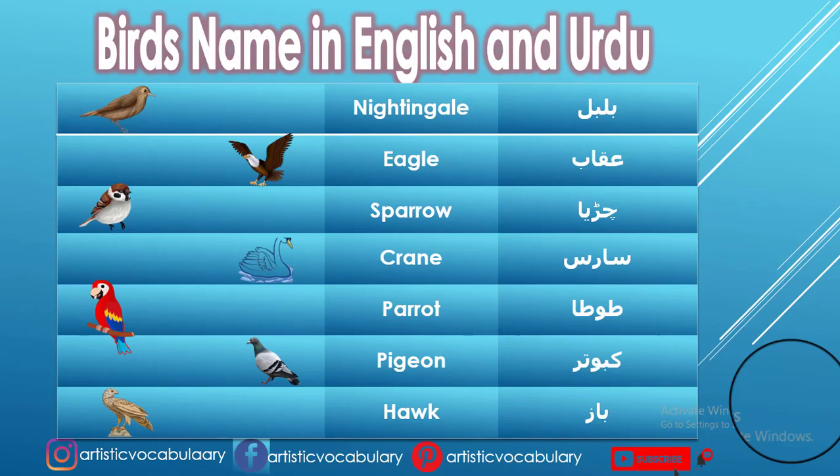Our first word is Bulbul, which we will call Nightingale. We've mentioned pictures with you so that you can easily understand which bird is being referred to. Our second word is Ukaab, which we will call Eagle.